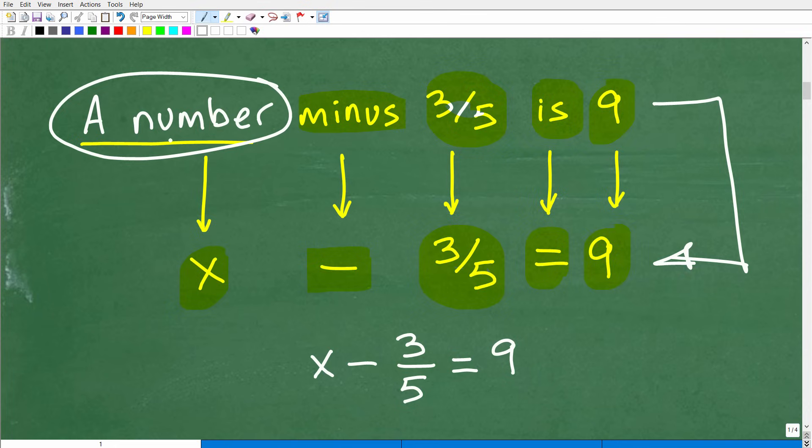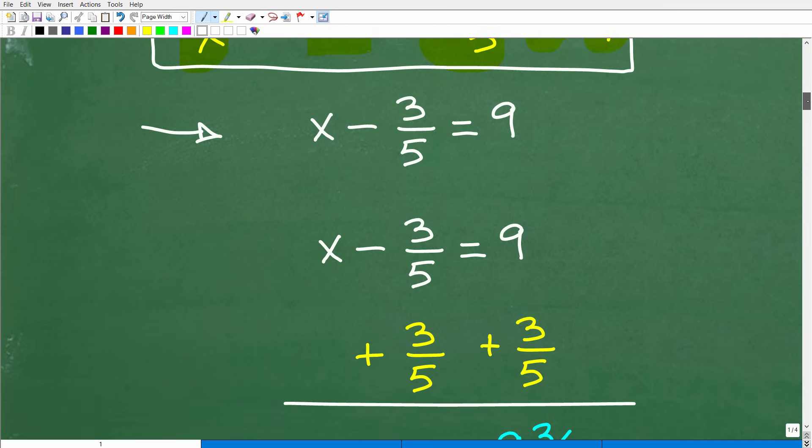So now we translated this verbal phrase or sentence into a variable phrase or sentence or equation. An algebraic equation. So we have x minus three-fifths is equal to nine. So this is really what we're talking about right here. x minus three-fifths is equal to nine.